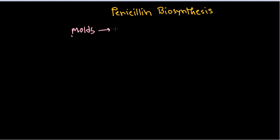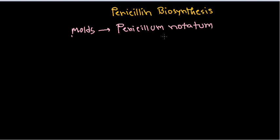The first type of mold from which Alexander Fleming obtained penicillin is Penicillium notatum. This was the strain from which the first type of penicillin was obtained. But over time that was modified, and nowadays for industrial-scale production we use Penicillium chrysogenum.